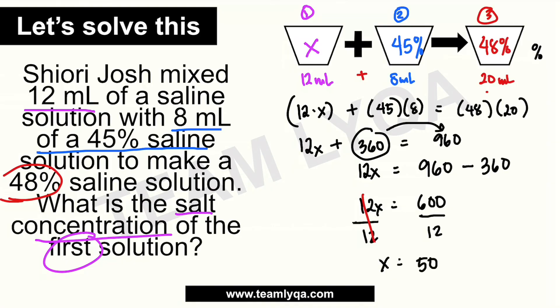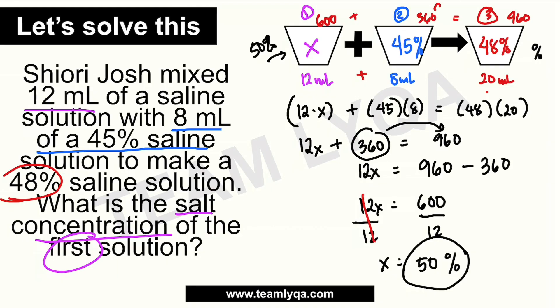So anong sagot natin? Ang sagot ay 50%. Ibig sabihin nun, ang concentration ng first solution ay 50%. If you want to make sure, pwede mong i-check: 50 times 12 magiging 600, plus ang 45 times 8 na 360. Equal ba siya sa 48 times 20? Of course it is — 960. So tama tayo dyan — indeed, 50% ang sagot.